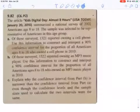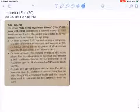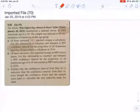Let's walk through a confidence interval problem. I'm looking at this problem here about Kids Digital Day, and it summarizes a national survey of 2,002 Americans aged 8 to 18. They're selected to be representative of Americans in this group. Of the survey, 1,321 report owning a cell phone. Now, we need to interpret a 90% confidence interval, and construct it as well, for the proportion of all Americans who owned a cell phone in 2010.